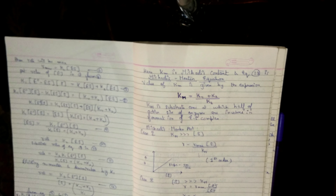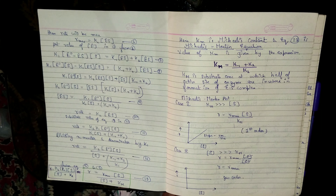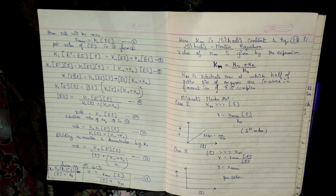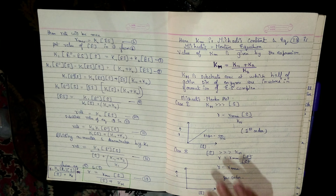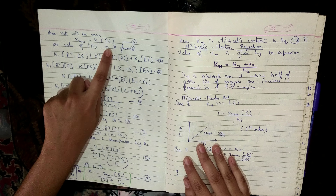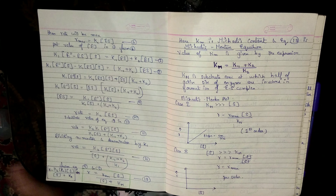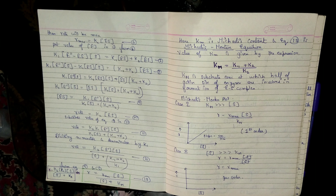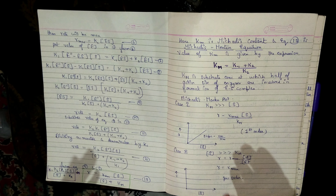Next, our rate is maximum when all enzyme active sites are occupied. So Rmax = k2 × [ES]. Now that our basic equations are established, we will use them together to derive the Michaelis-Menten equation.